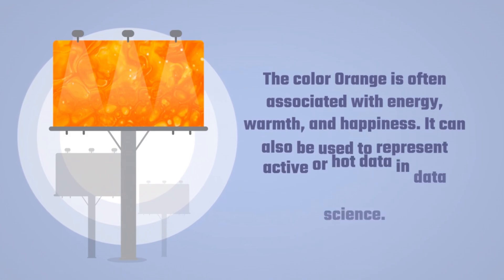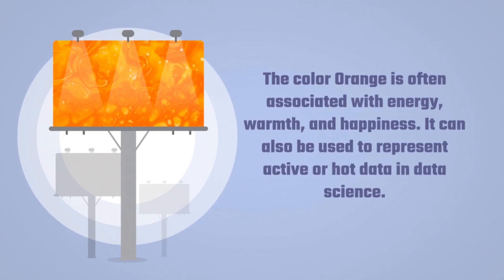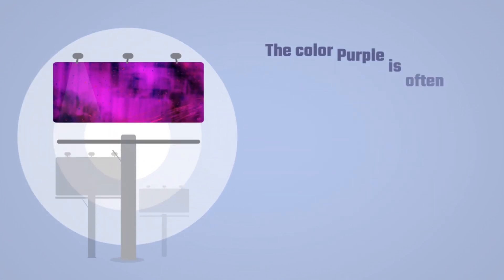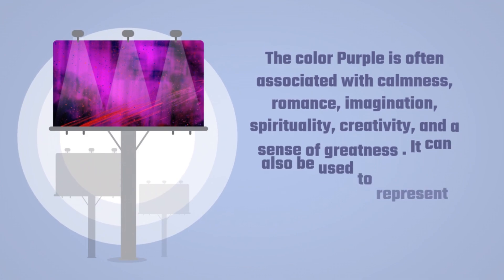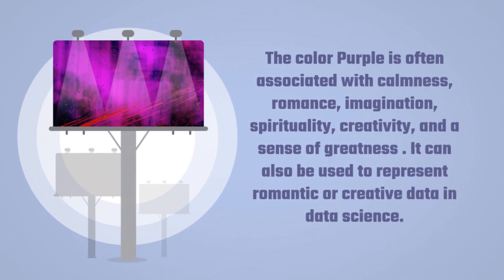The color orange is often associated with energy, warmth, and happiness. It can also be used to represent active or hot data in data science. The color purple is often associated with calmness, romance, imagination, spirituality, creativity, and a sense of greatness. It can also be used to represent romantic or creative data in data science.